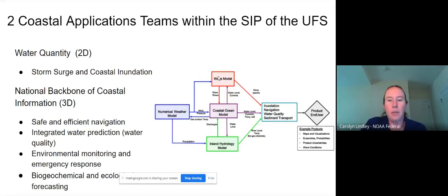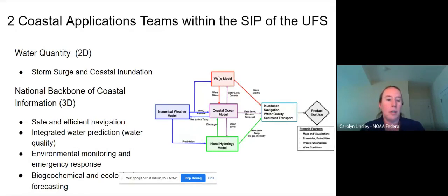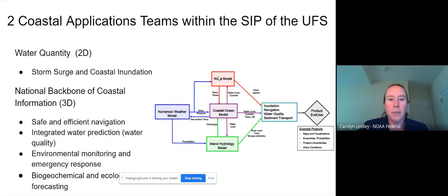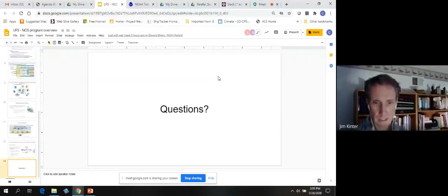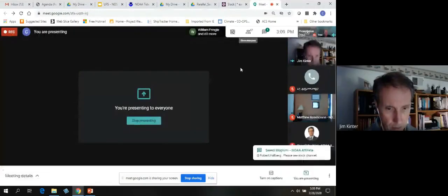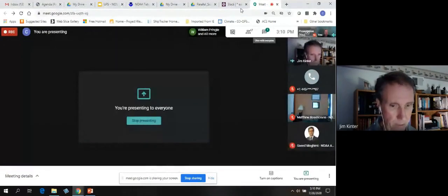The third area is incorporating ROMS 4D-Var within Marine JEDI, funded by the FY19 hurricane supplemental, with ocean services' role being to test that capability within the operational environment. NOS expects to be proactively involved in the two coastal applications teams: one on water quantity and one on water quality — the coastal processes team. This is a big priority for ocean service and we plan to engage to the greatest extent possible.